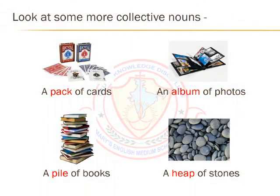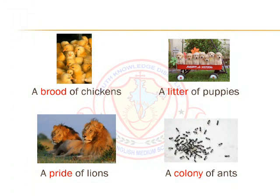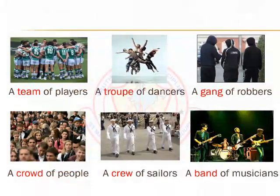Look at some more collective nouns. Things: a pack of cards, an album of photos, a pile of books, a heap of stones. There are collective nouns which describe groups of animals, like a brood of chickens, a litter of puppies, a pride of lions and a colony of ants. There are also nouns which refer to groups of people: a team of players, a group of dancers, a gang of robbers, a crowd of people, a crew of sailors, a band of musicians.